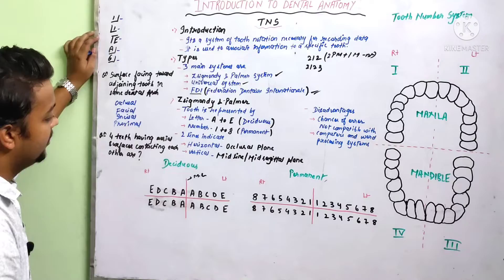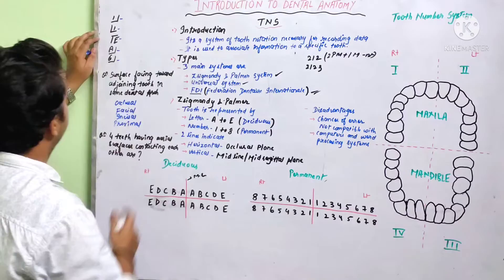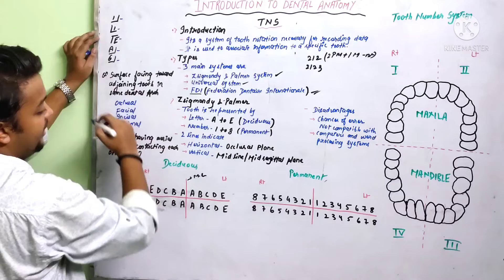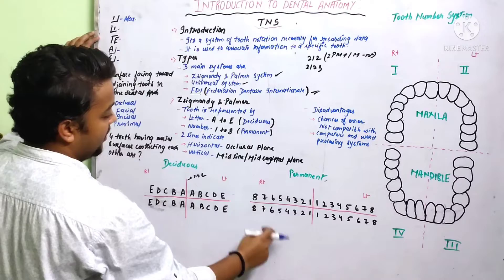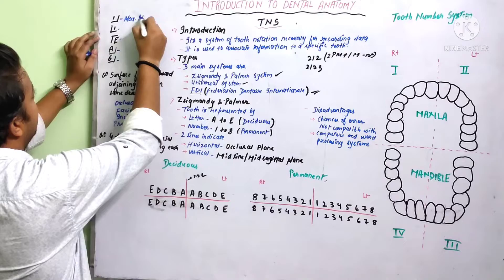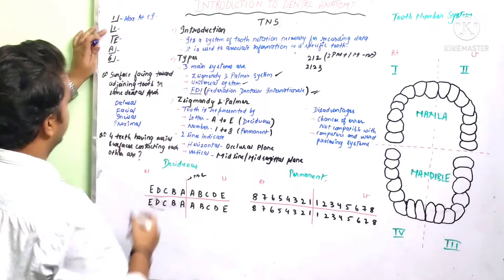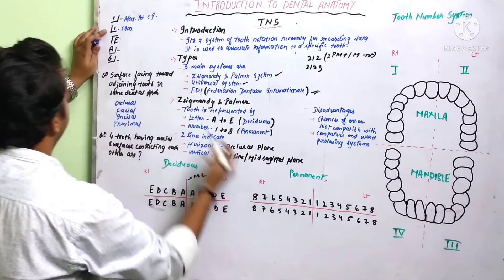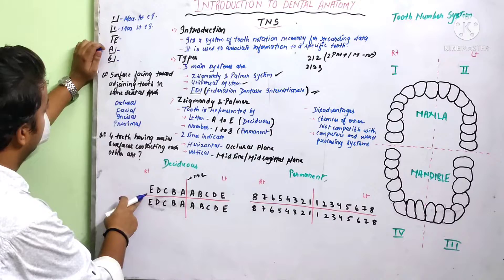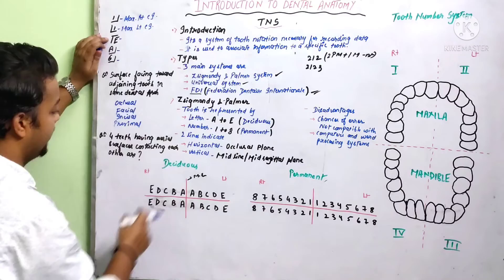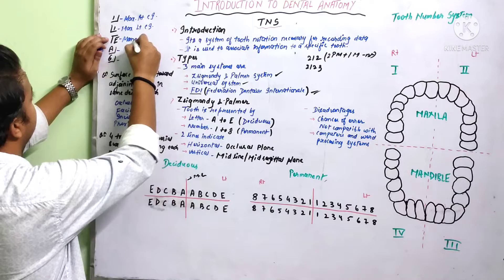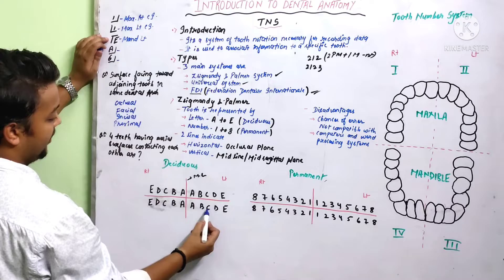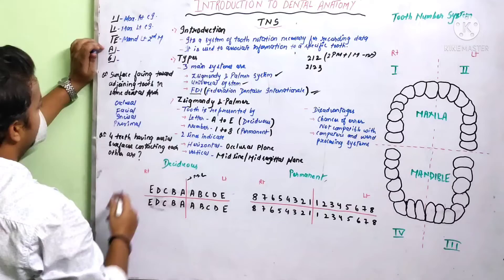Let us solve some questions. The first number notation: looking at the quadrant, above the line is maxillary. If the tooth is on the right side and it is tooth number 1, it is the maxillary right central incisor. The next one is also maxillary but the quadrant changes to the left — so it becomes the maxillary left central incisor. For the letter E, which is used in the deciduous system, with the lower quadrant it is mandibular left — and counting to the fifth position, that becomes the second molar.